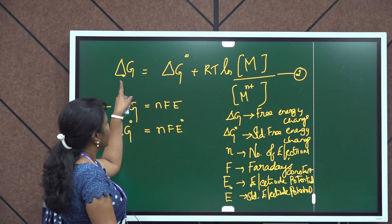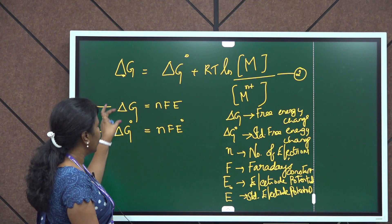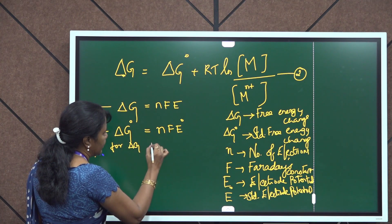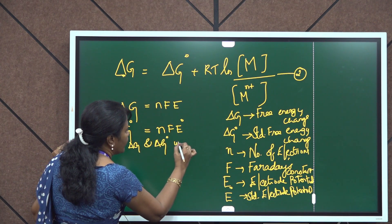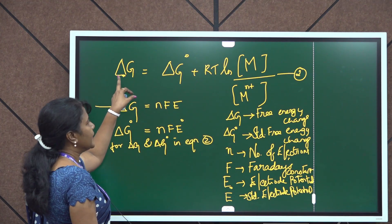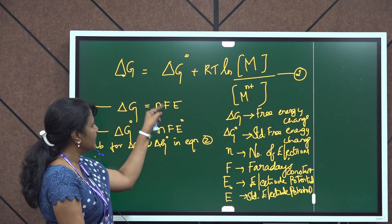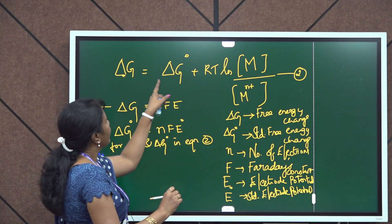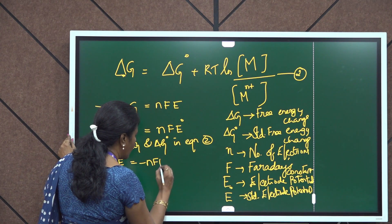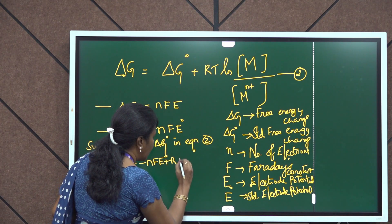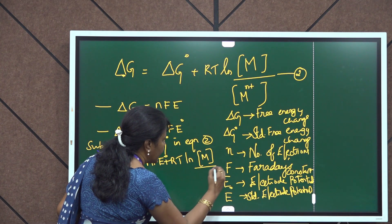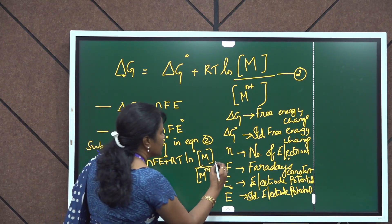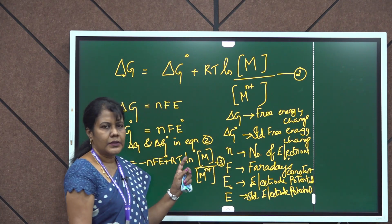Now we have expressions for delta G and delta G naught. Substituting for delta G and delta G naught into equation 2, this equation can be written as: minus nFE = minus nFE naught + RT ln (M / M^(N+)). This is assumed as equation number 3.